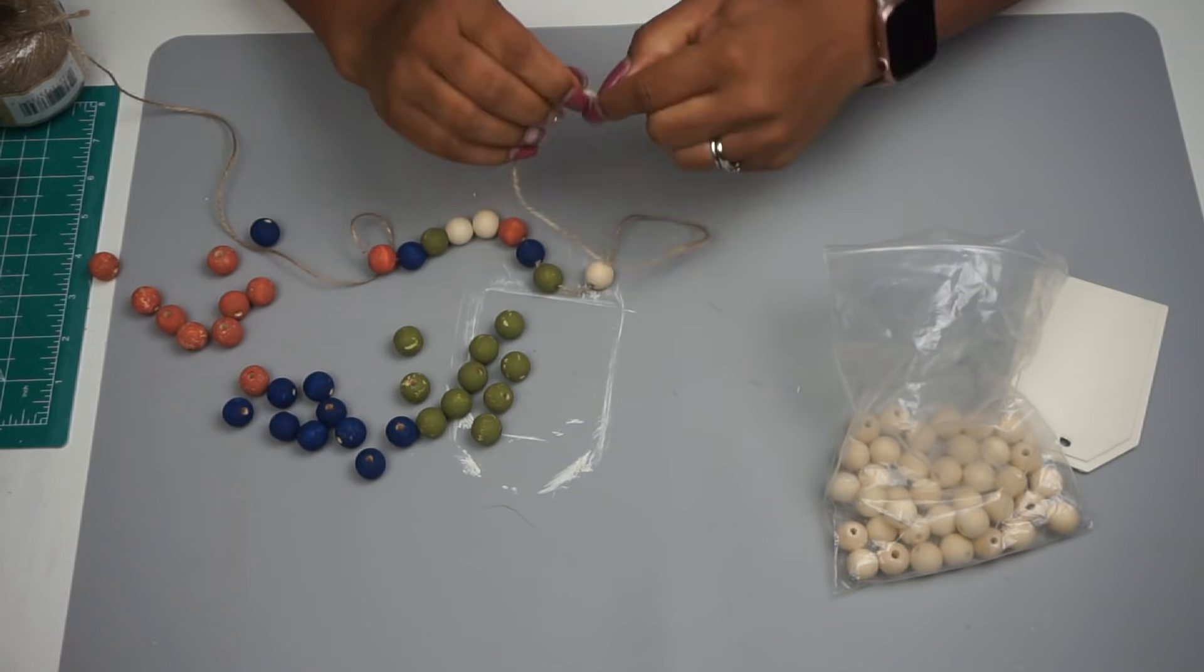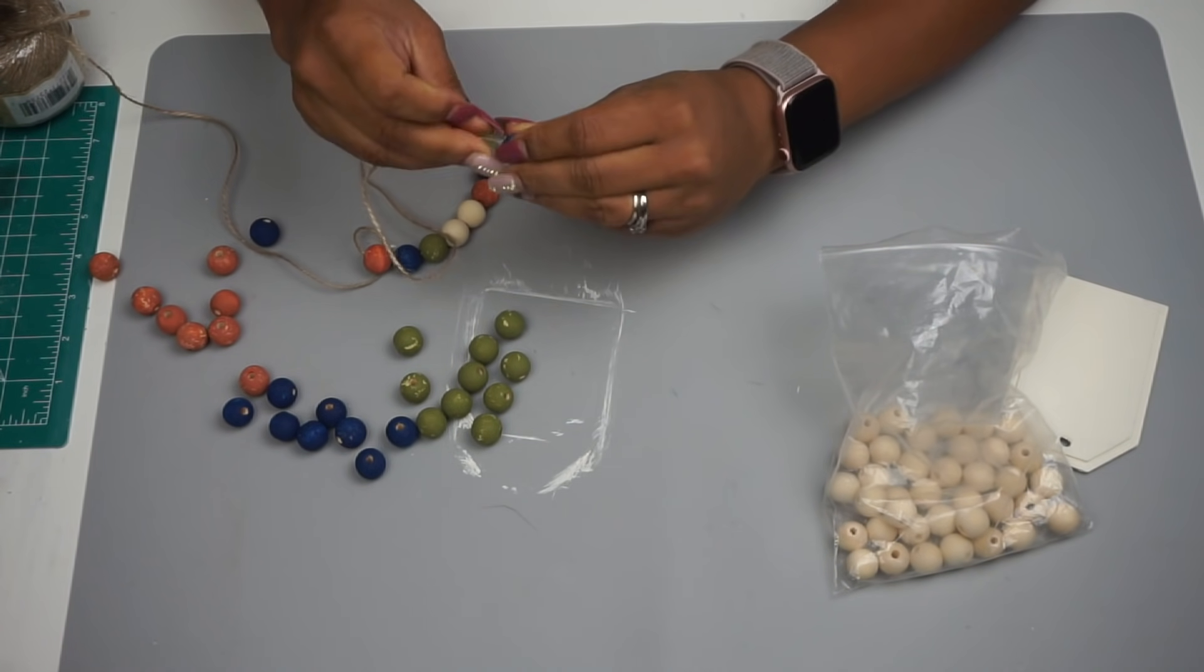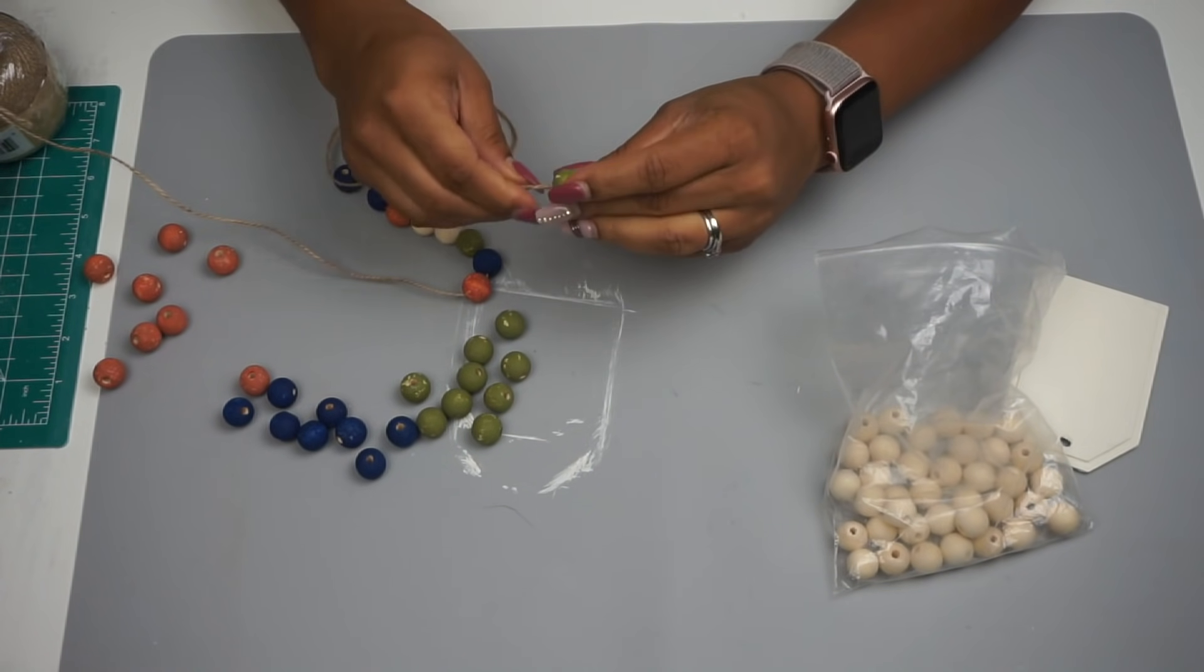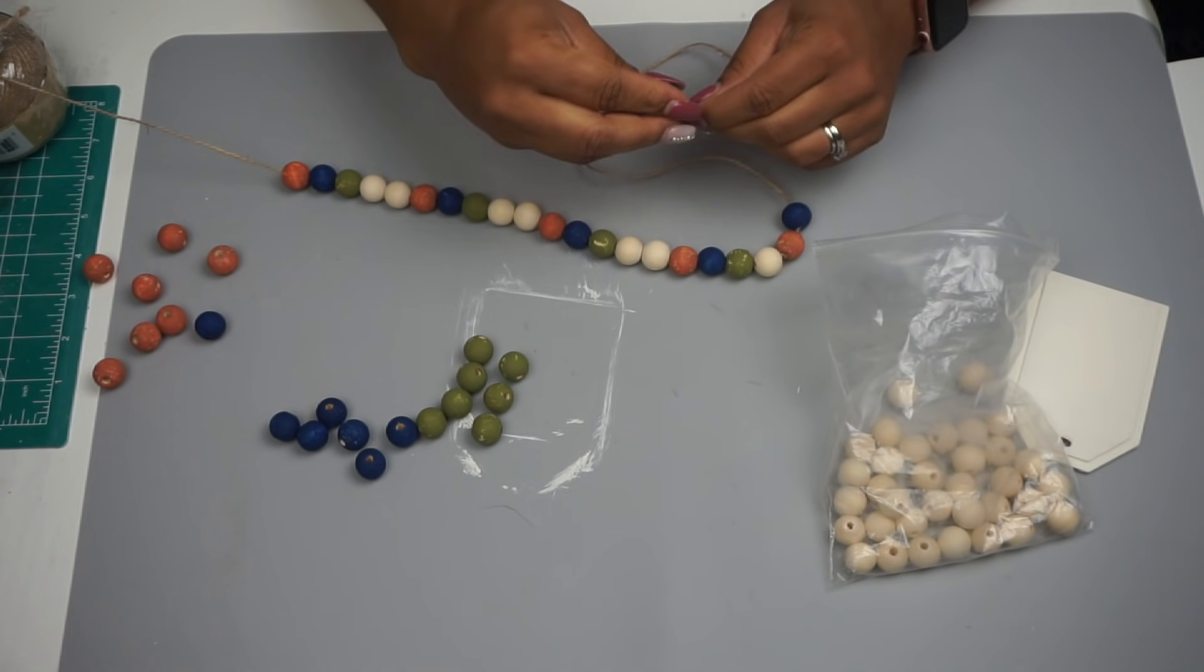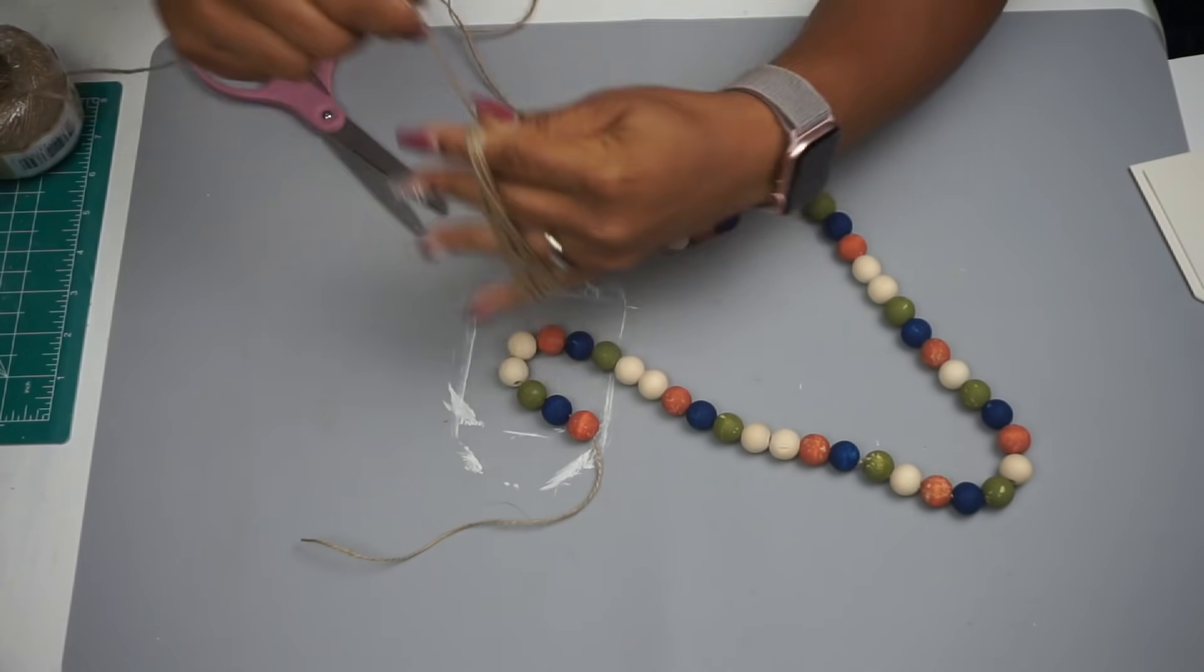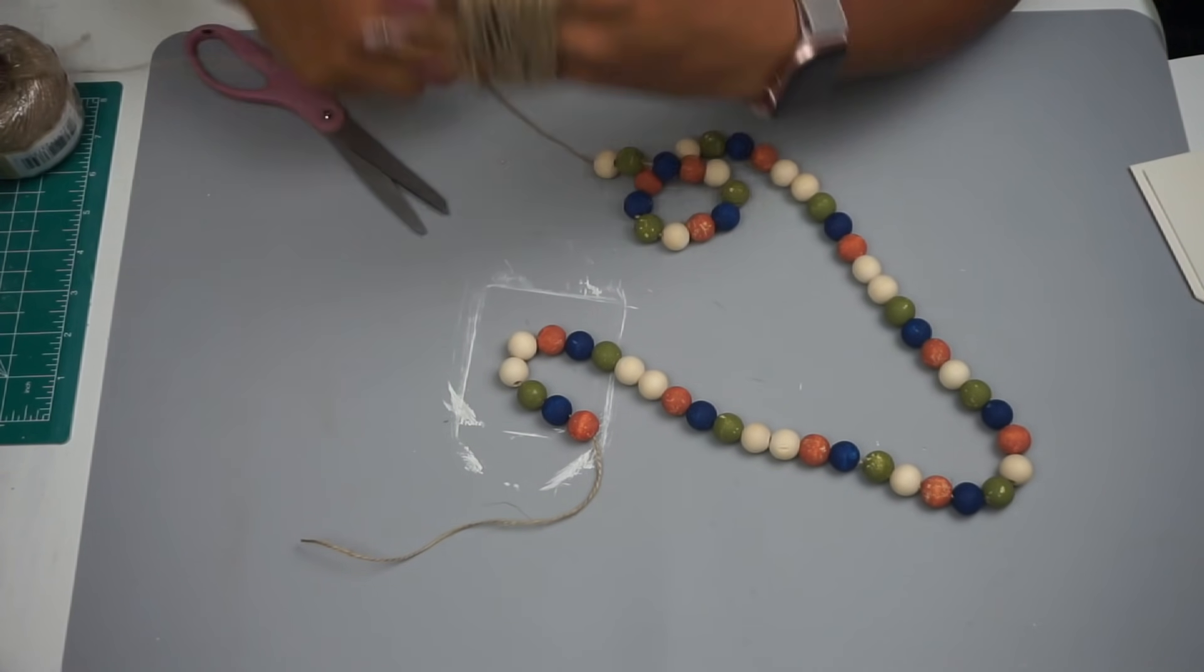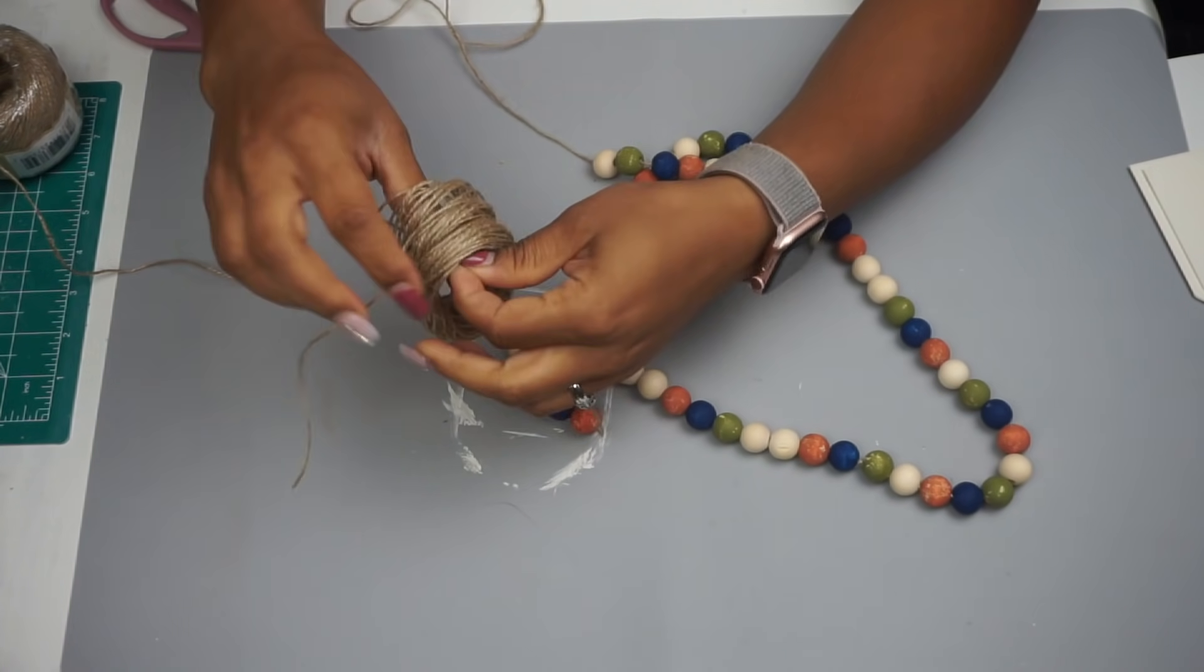So, then next, I took some jute twine and just started to fish all of my beads through. And I did orange, blue, green, and then two natural wood bead colors next. And then just continued on and so forth. At one point, I did start to do one wood bead color. And I just wanted to make sure I used all of the colored beads. So, I think I did 12 of each color. I wanted a really long, really large garland.